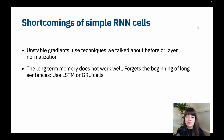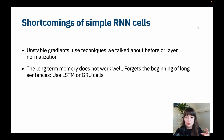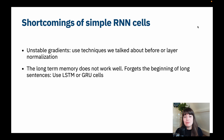Another problem with simple RNN cells is that they tend to forget. If you give it a long sentence — say with 40 or 50 words — it really easily forgets the beginning of the sentence. This is the whole point of recurrent neural networks: to remember a whole sentence, put things into context, and then act on that information. But if you forget the beginning, you might not be very effective at whatever task you're working on.